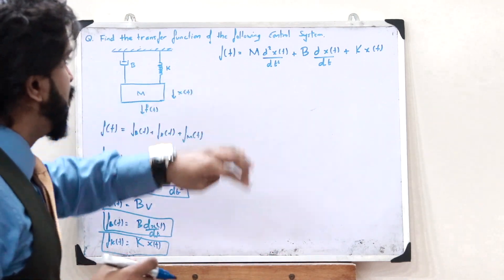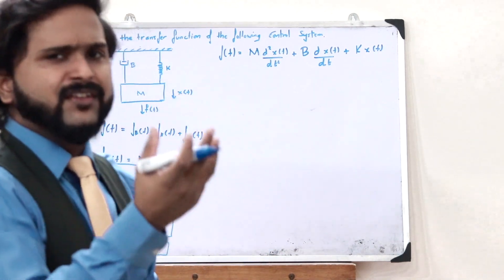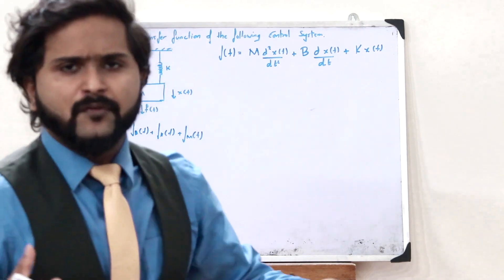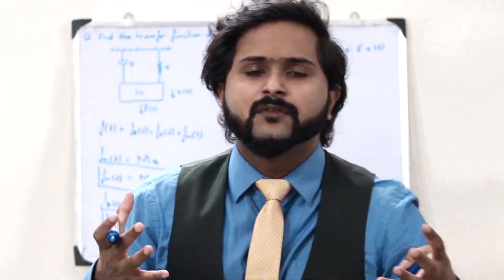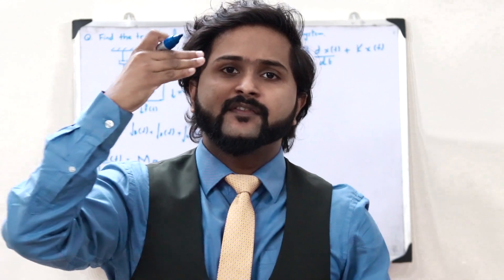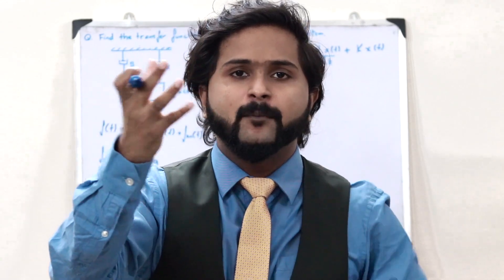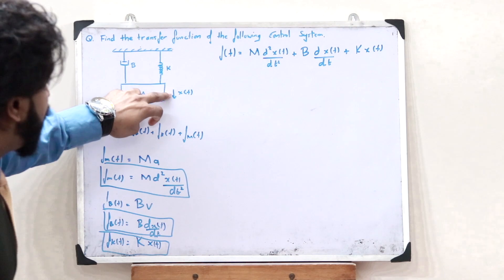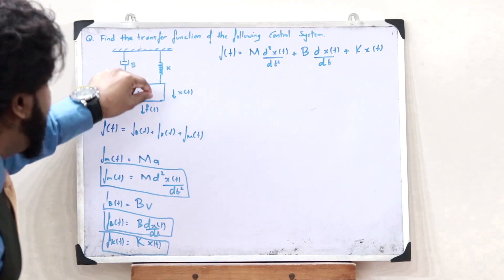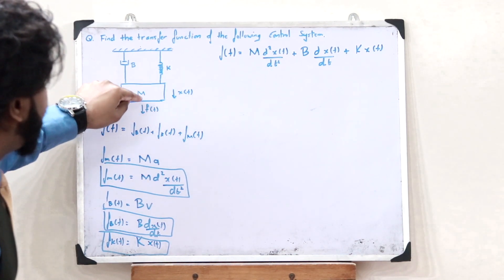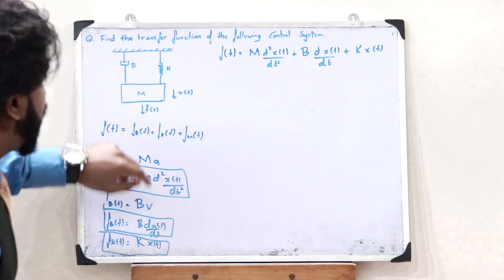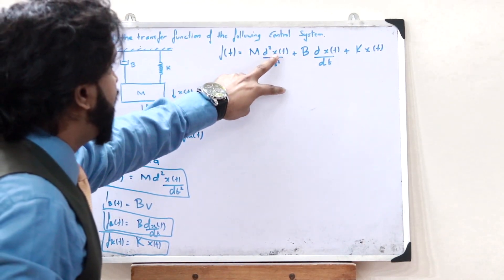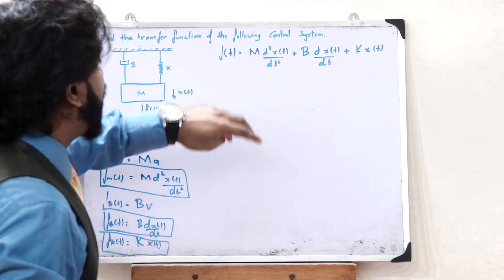Now, we are supposed to find the transfer function. The transfer function of any given control system is given as the ratio of the output to the input. Here, the output is the displacement X of T, and the input is the force F of T. So therefore, what we have to find is X of T divided by F of T.